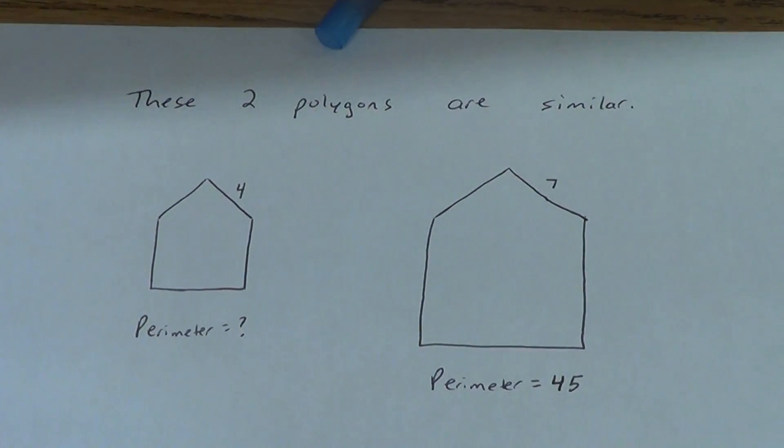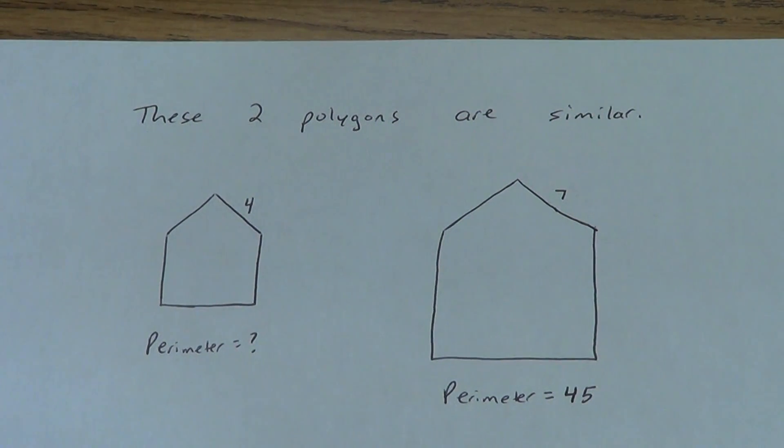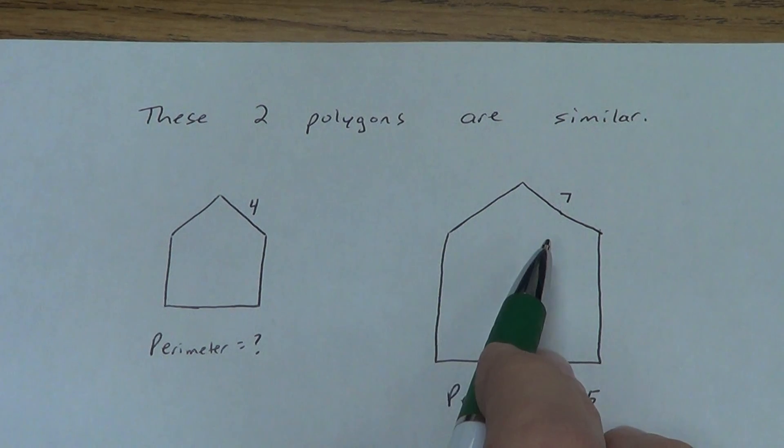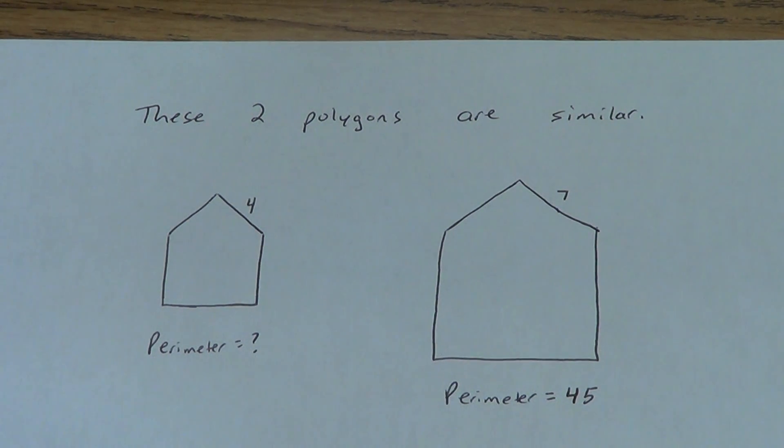Next example. We're going to do the perimeter thing. Copy this one down as well. These polygons are similar. I've got a 4 and a 7. The perimeter here, I don't know. The perimeter here is 45. Go ahead and copy that down real quick. If you want to try to solve it, that's fine. If you don't quite know how to do this one, just get it copied down. Come back. Pay attention.